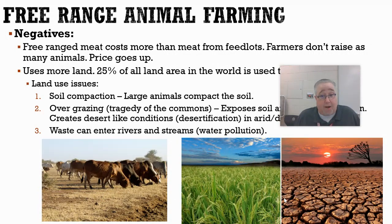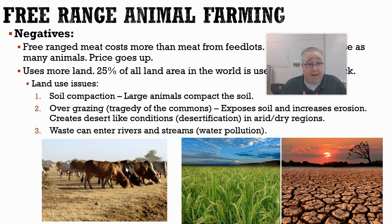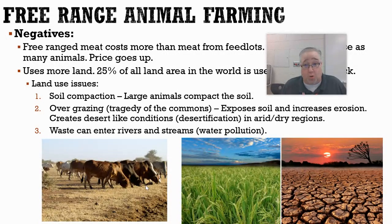Overgrazing can lead to desertification — taking a grassland area and letting animals graze it down until the land turns into a desert. These two pictures show how it doesn't take much for soil to degrade completely. We see this a lot in arid and dry regions. There can also be waste problems even with free-range animals — they'll find a local pond or waterway to drink from and will likely defecate there too, causing water pollution.